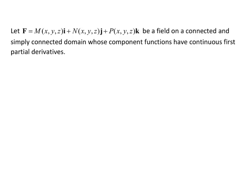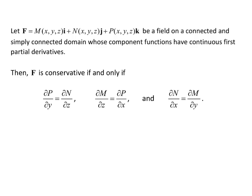So component functions are m, n, and p, and they all have to have continuous first partial derivatives with respect to x, y, and z. Then capital F is conservative if and only if: partial p partial y equals partial n partial z, partial m partial z equals partial p partial x, and partial n partial x equals partial m partial y.